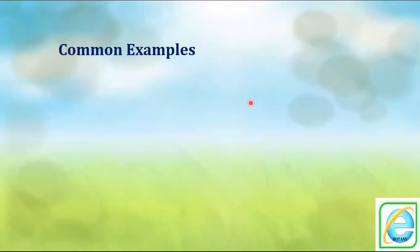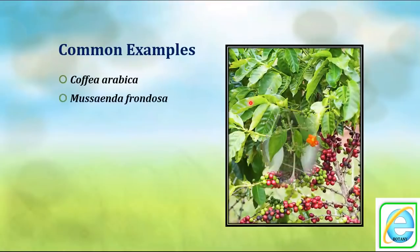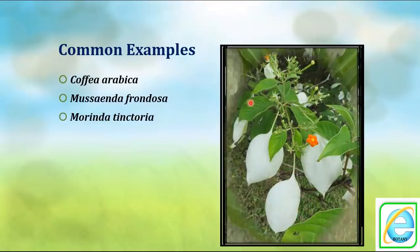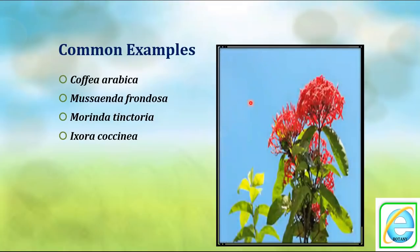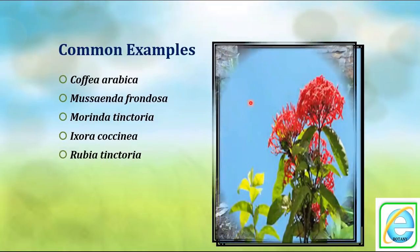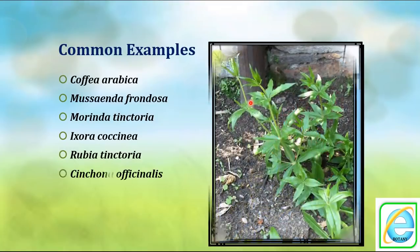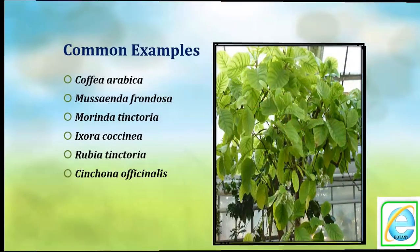Common examples of the Rubiaceae family include: Coffee arabica, Mussaenda frondosa, Morinda tinctoria (madder plant), Ixora coccinea, Rubia tinctoria, and Cinchona officinalis (fever plant).